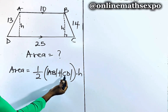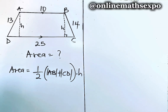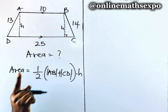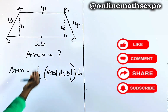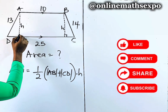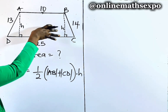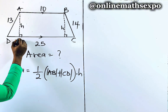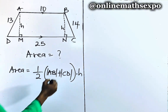We are given AB and CD but we don't know the height. The question is: how do we find this height? Looking at this, we observe that we have actually formed a right angle because this is a perpendicular height. We have formed a rectangle from this shape. Let's name the new points M and N.